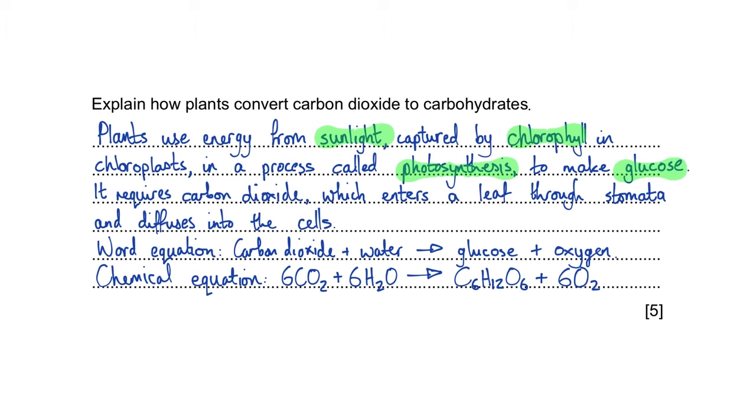Now then it requires carbon dioxide, but that's mentioned in the question so it's unlikely you'd get a mark for that. But it doesn't mention how the carbon dioxide actually gets into the plant cells in the first place. Well first it's got to enter the leaf which is through those little holes called stomata, and then from the inside of the leaf it diffuses into the cells.